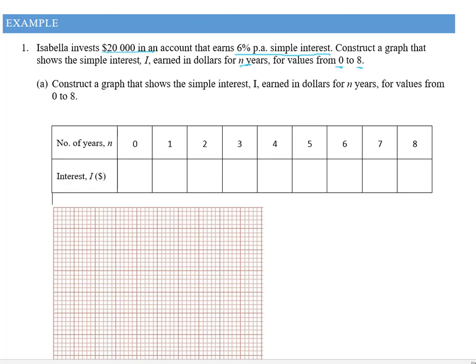So what this is saying to me is I'm going to use my simple interest formula I equals Prn. My principal I have is $20,000. I'm going to multiply it by my interest rate which is 6% which is 6 over 100 and I'm going to multiply that by n.